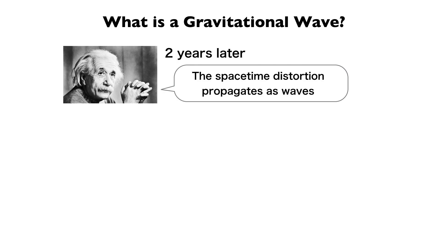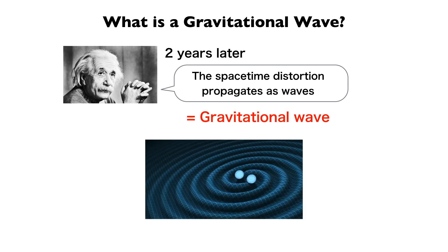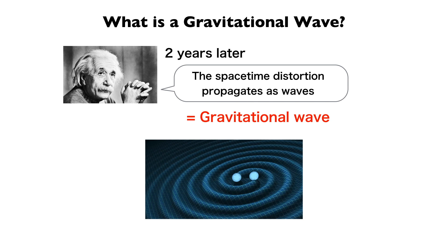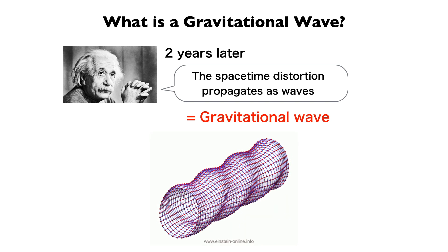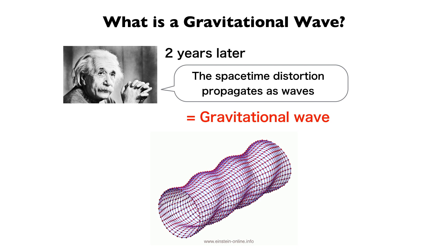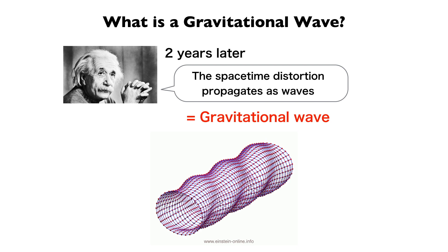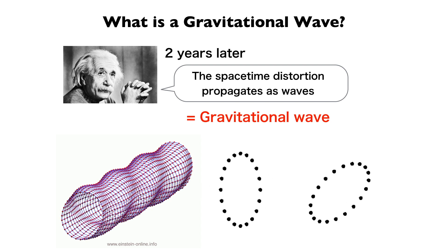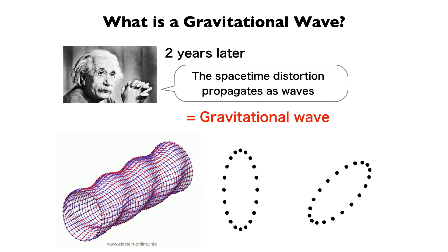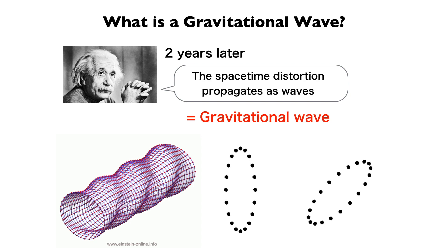And two years later, he also predicted that this space-time distortion can propagate as a wave — that is gravitational wave. It gives a simple effect that distance between two bodies changes with time. This animation shows how an object moves if a gravitational wave passes through the screen: the vertical distance expands when horizontal distance shrinks, and vice versa.